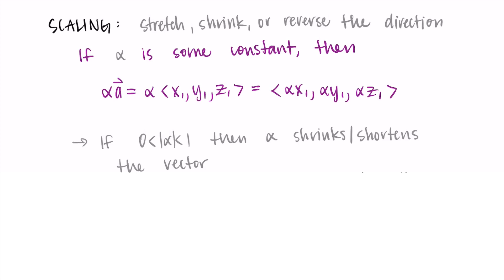If the absolute value of our alpha is between 0 and 1, so this is some number between negative 1 and 1, then alpha shrinks the vector. You can think that it shortens it. So we're taking each of the components and somehow making it smaller by a factor of alpha, since alpha is between negative 1 and 1. When we multiply, it gets smaller.